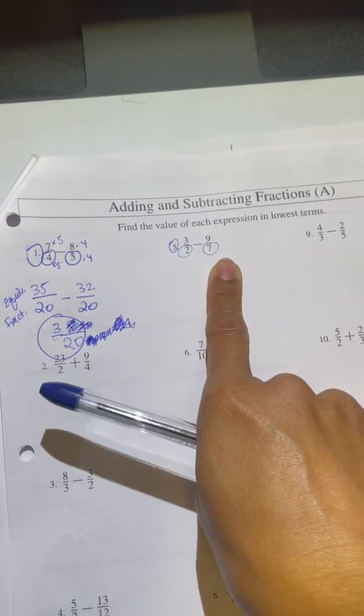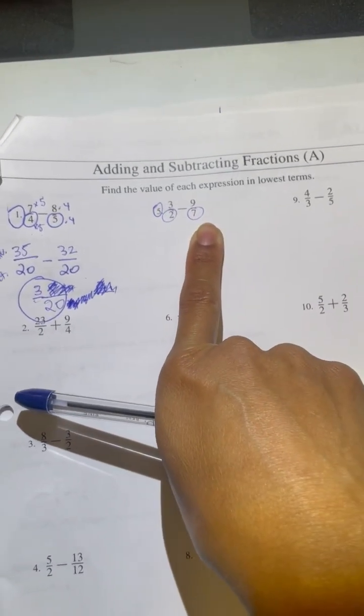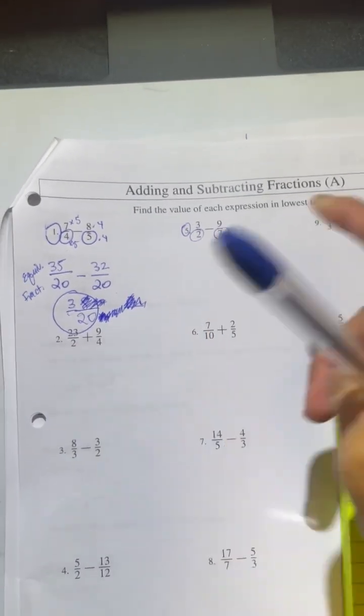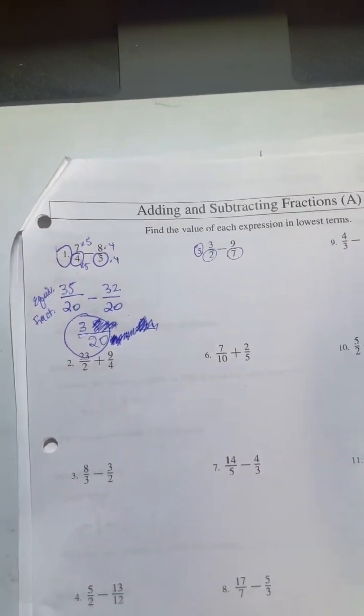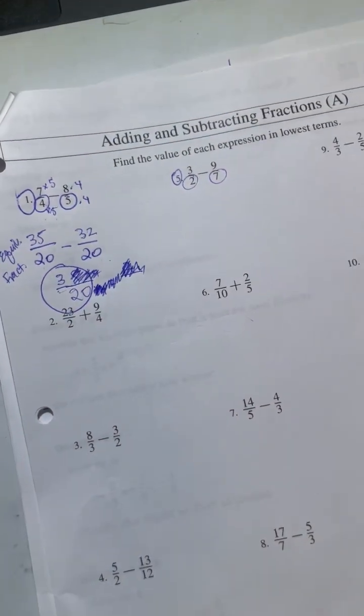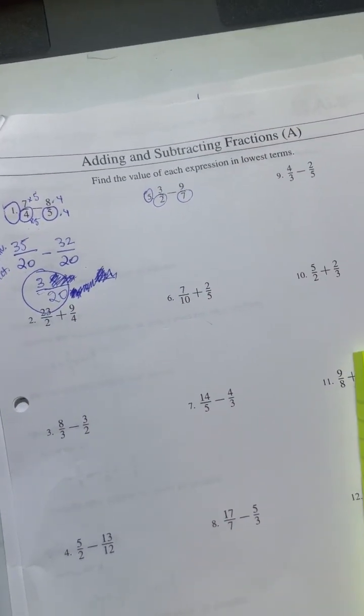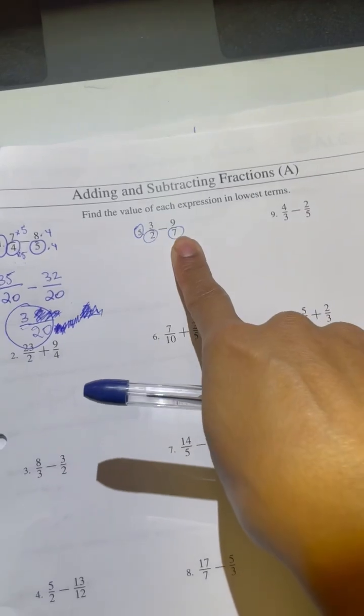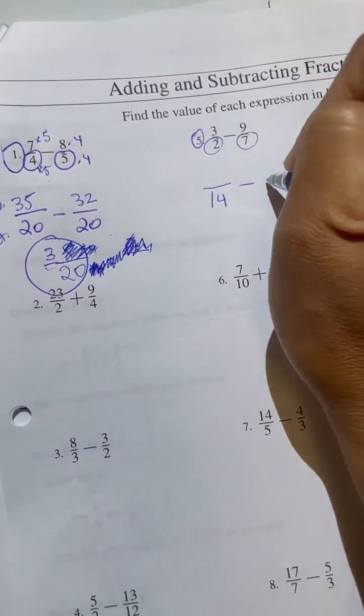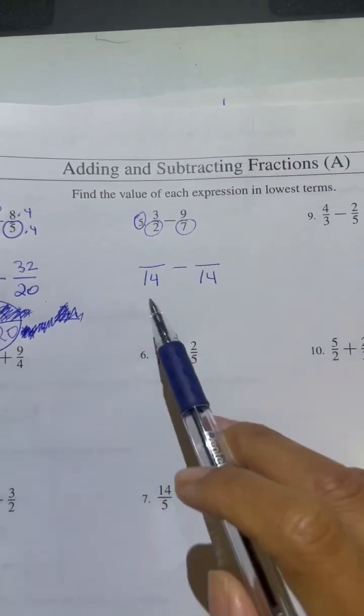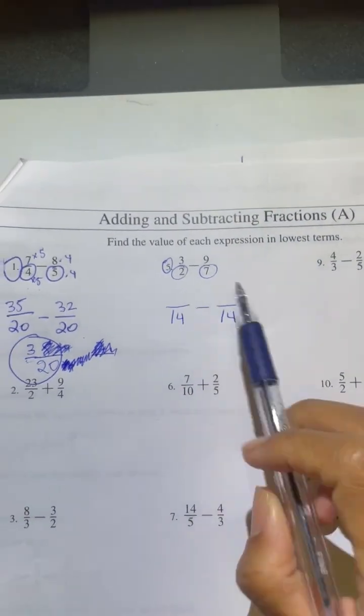What does 2 and 7 have in common? It's a multiple. 14. So you guys are getting faster at this. So one way of determining lowest common multiple is you multiply them together. Or you could do it in your head. 2, 4, 6, 8, 10, 12, 14, 7, 14. You can list out the multiples in your head, or you can multiply those two together to get a multiple. What do I do next?